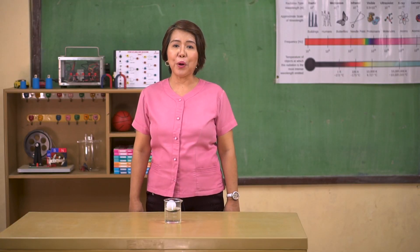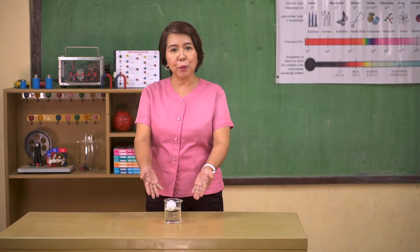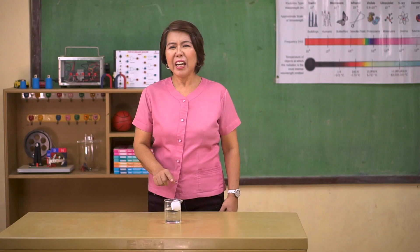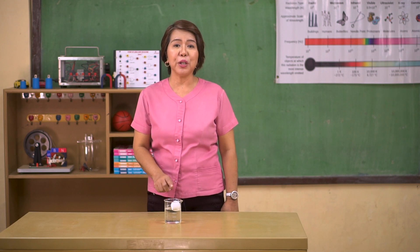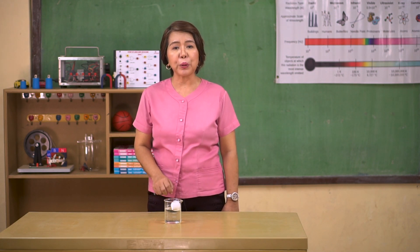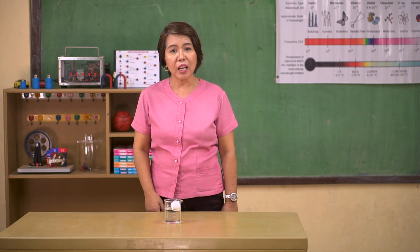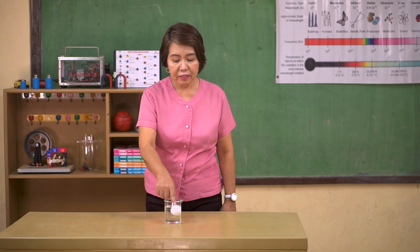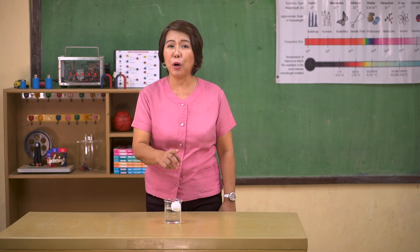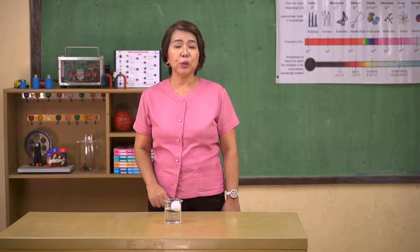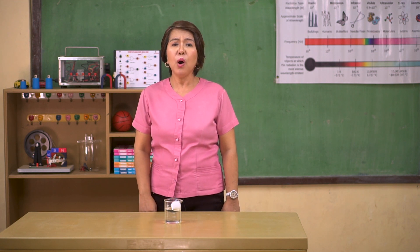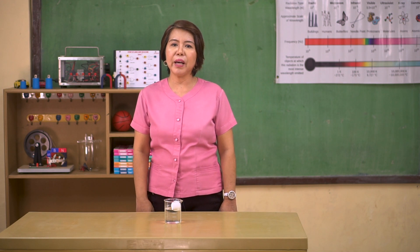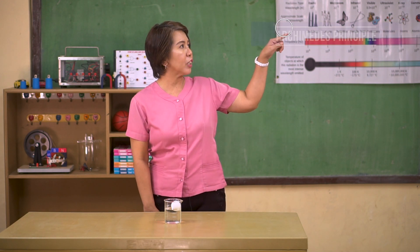Buoyant force can be observed when you try to submerge a ball underwater. It would be difficult to submerge the ball into the water because the water is exerting buoyant force, counteracting the force that you are applying to the ball. In the end, the ball will rise again and eventually float on the water. Why does this ball float in water? This phenomenon could be explained by Archimedes' principle.